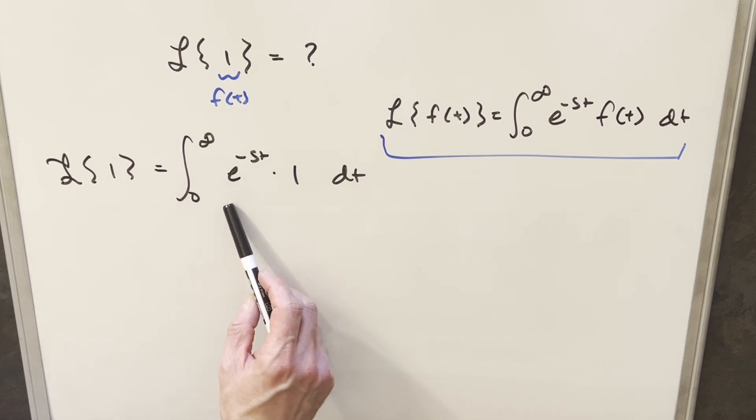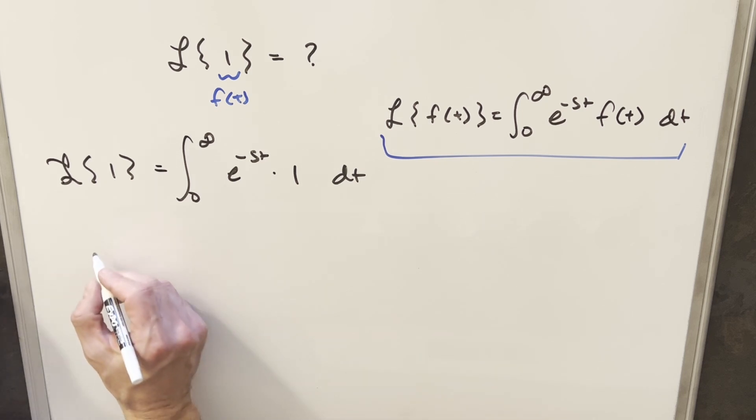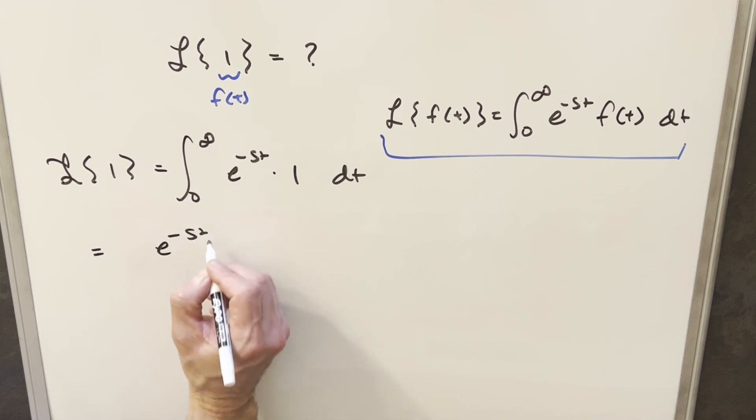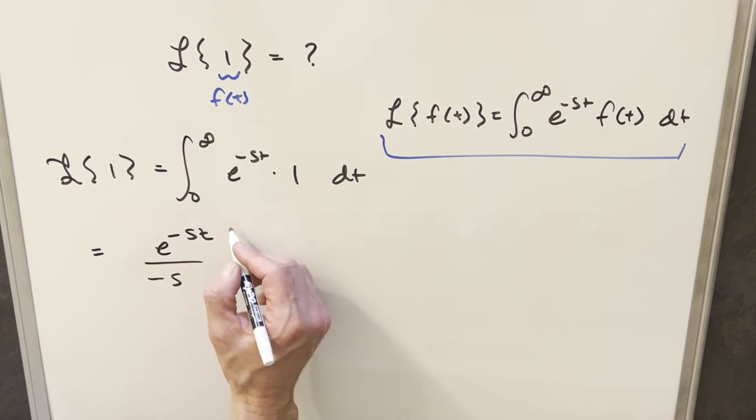And the nice thing about Laplace transforms is integrating stuff with e to the minus st. It's usually not too hard. So we can usually do most of these integrals without too much trouble. So then just integrating this thing, we end up with e to the minus st. We'll bring a minus s into the denominator. We just need to evaluate this from zero to infinity.